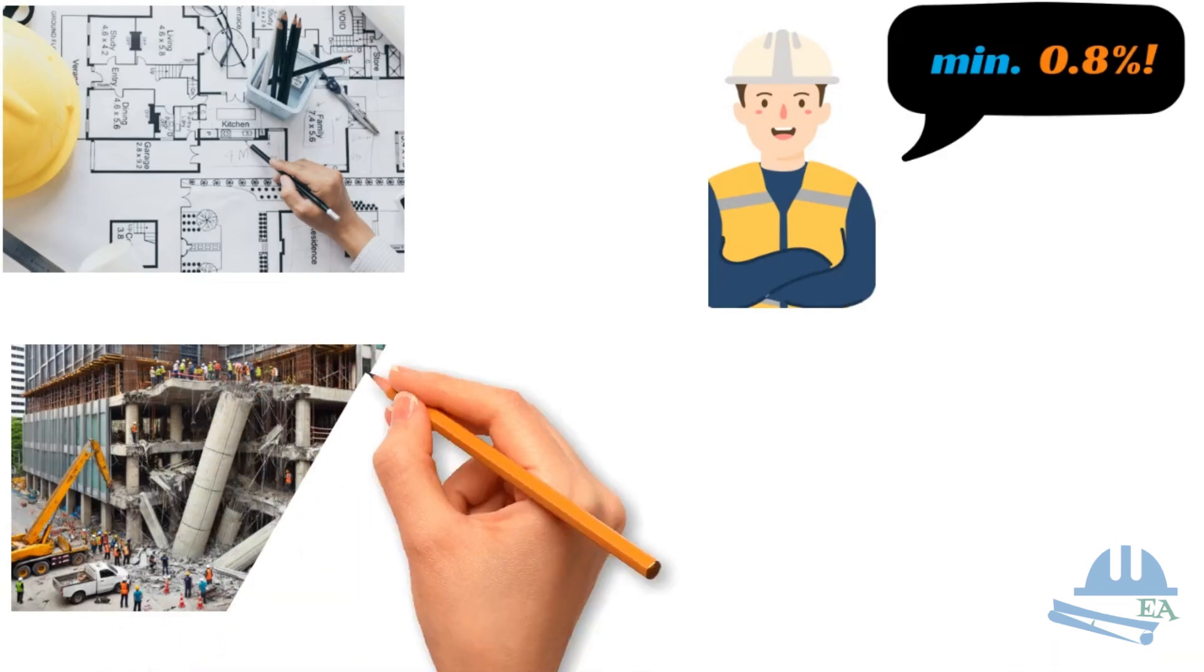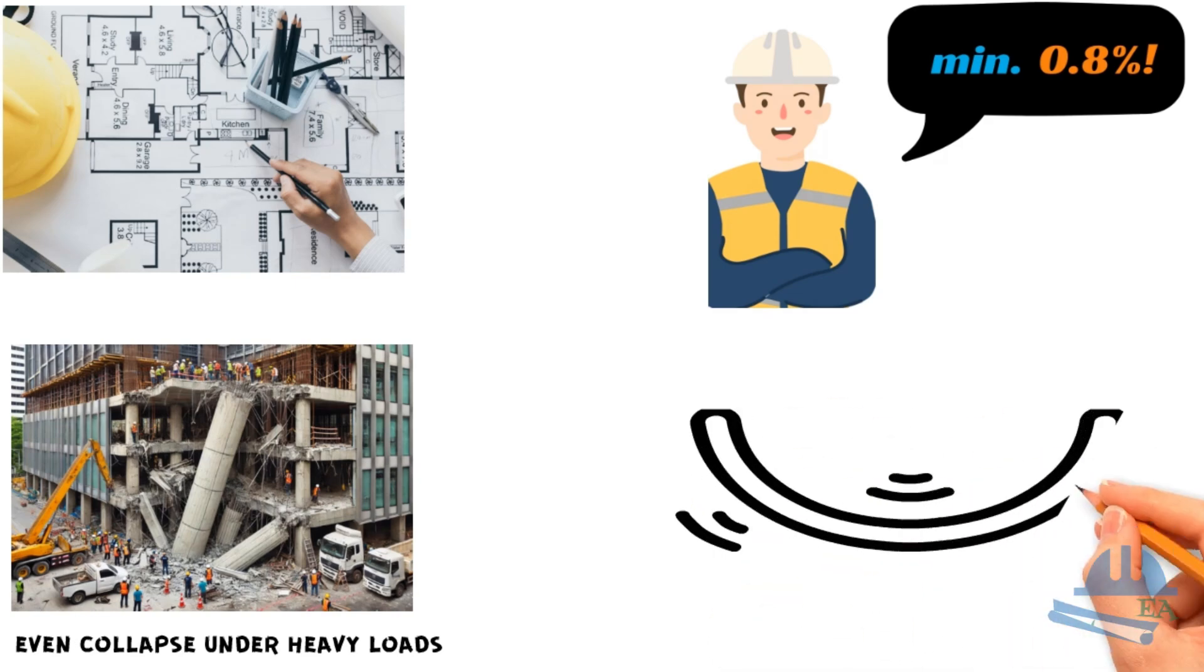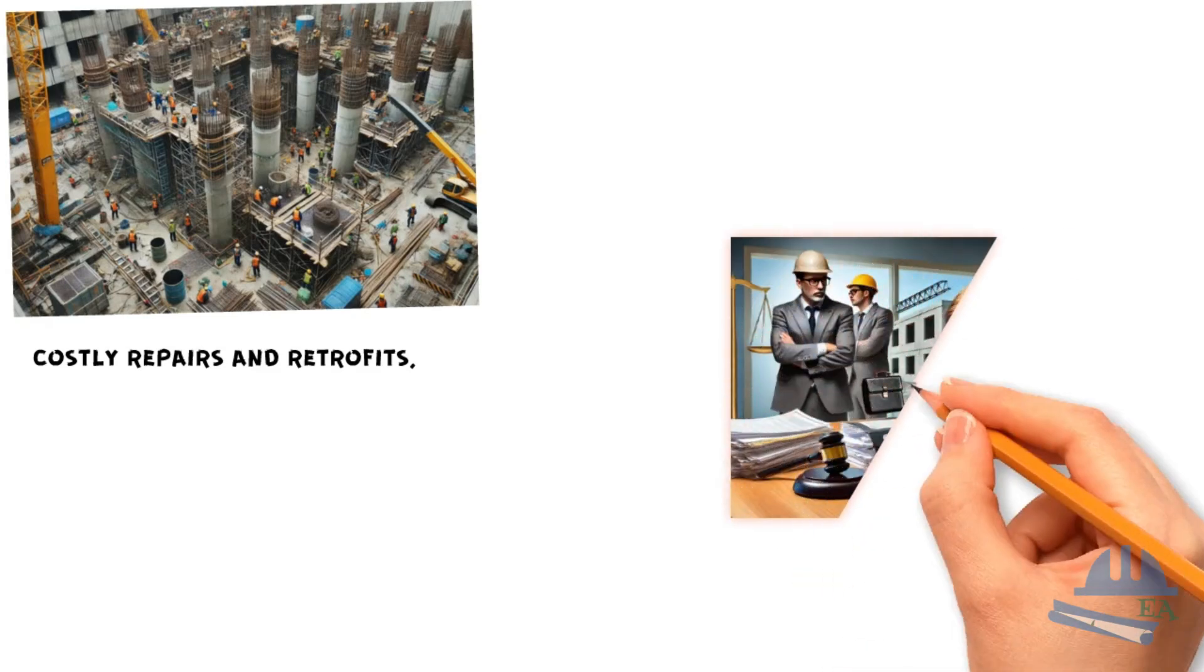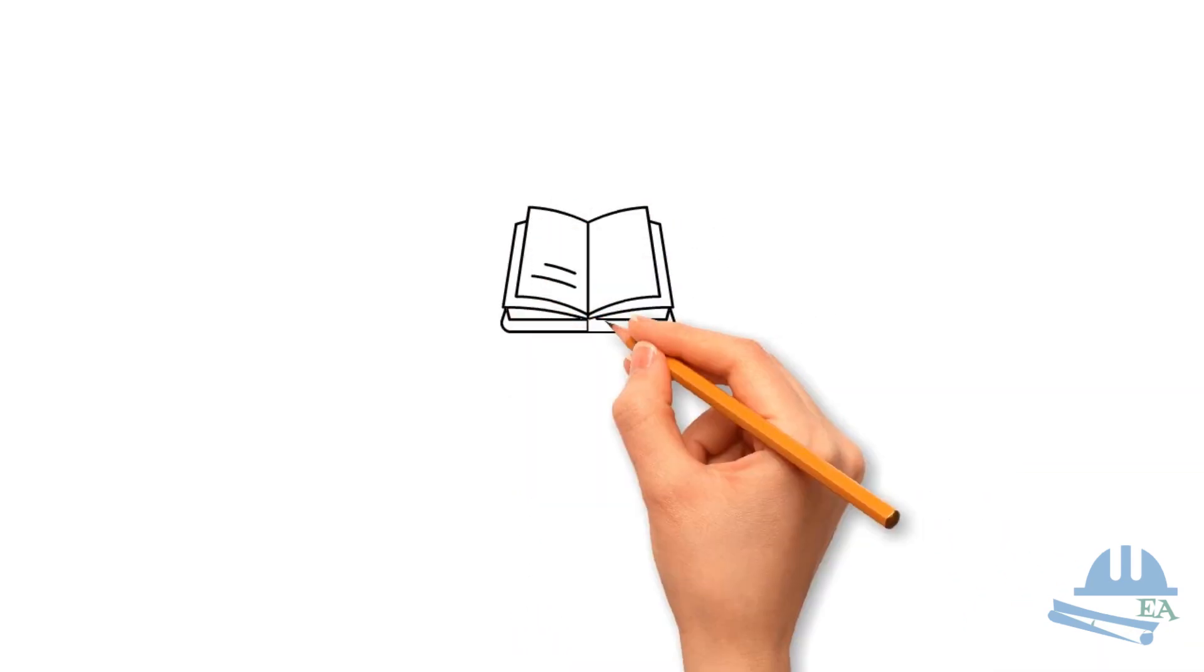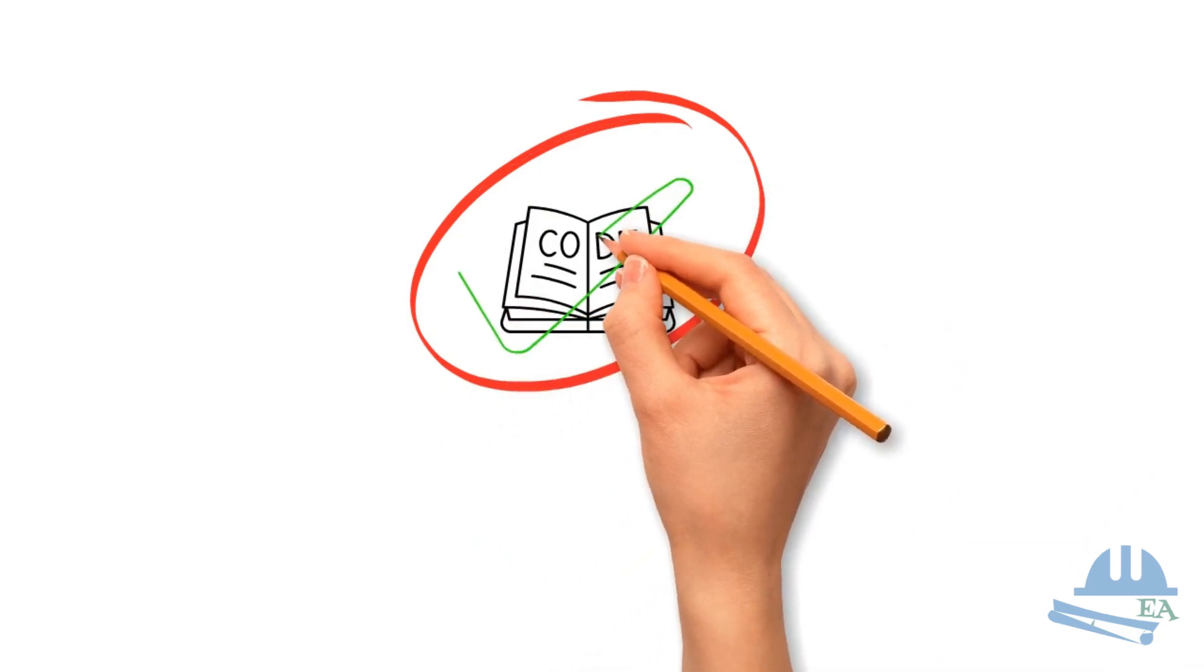First, the column may not have enough strength to support the loads leading to potential structural failure. This can cause excessive cracking and even collapse under heavy loads. Second, insufficient reinforcement can result in excessive deflections, which might affect the alignment of the entire structure. Finally, ignoring these standards can lead to costly repairs and retrofits, as well as legal issues and loss of credibility. Sticking to these standards is not just a legal obligation, but also a professional responsibility to ensure safety.